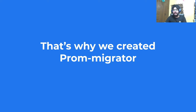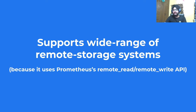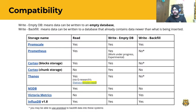That's why we created PromMigrator. PromMigrator supports a wide range of Prometheus-compliant remote storage systems. Here is a compatibility table of different storage systems with PromMigrator. Limitations listed are of the respective storage systems and not of PromMigrator. Please note that by backfill, we mean pushing data to a storage system that already has existing data older than the data being actually pushed.